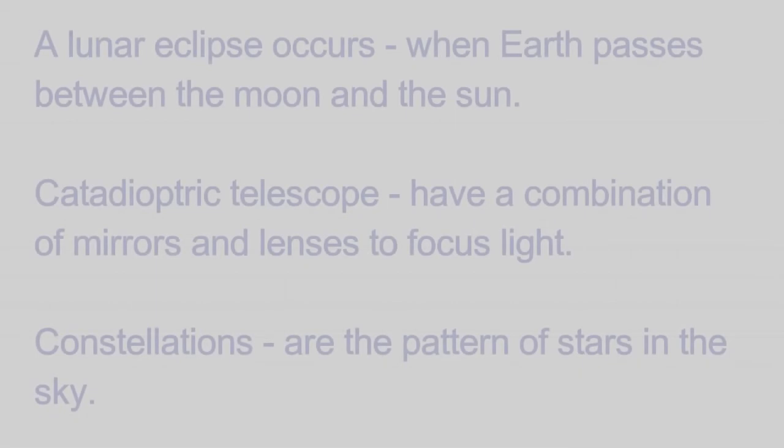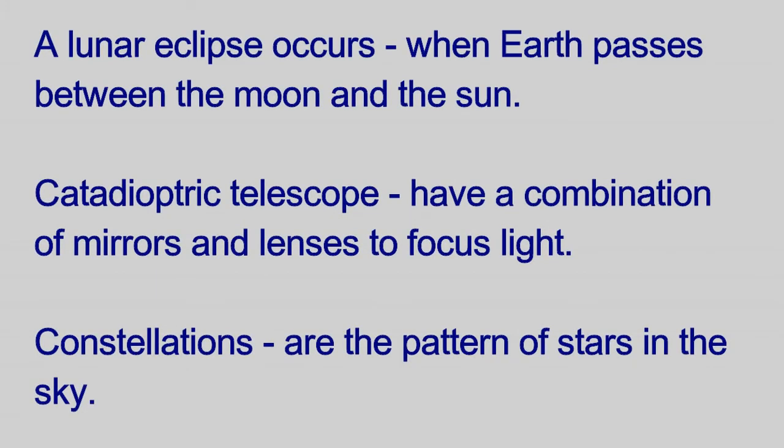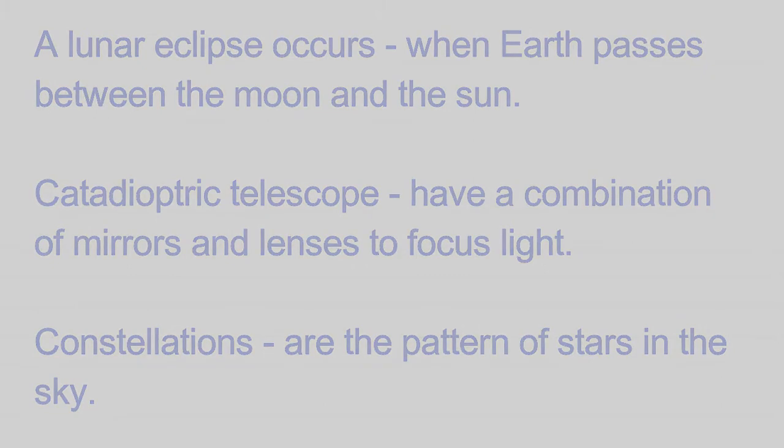A lunar eclipse occurs when the earth passes between the moon and the sun. Catadioptric telescopes have a combination of mirrors and lenses to focus light. Constellations are the pattern of stars in the sky.